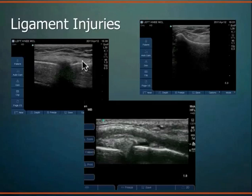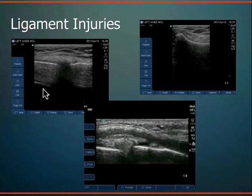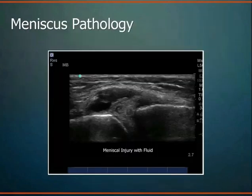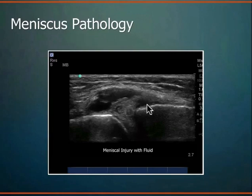For ligamentous injuries: this depicts a normal MCL with the femur, tibia, joint space, and the dense fibrillar MCL structure — similar to tendons but a little more hyperechoic and dense. A distal MCL tear shows disruption of the tissue distally with no ligamentous tissue remaining — it has retracted proximally. For meniscus pathology: you can see the joint space, femur, tibia, joint capsule distension, joint swelling, and displaced meniscus with meniscal cysts. There are deeper zones of the meniscus that ultrasound cannot image, requiring MRI for those areas.